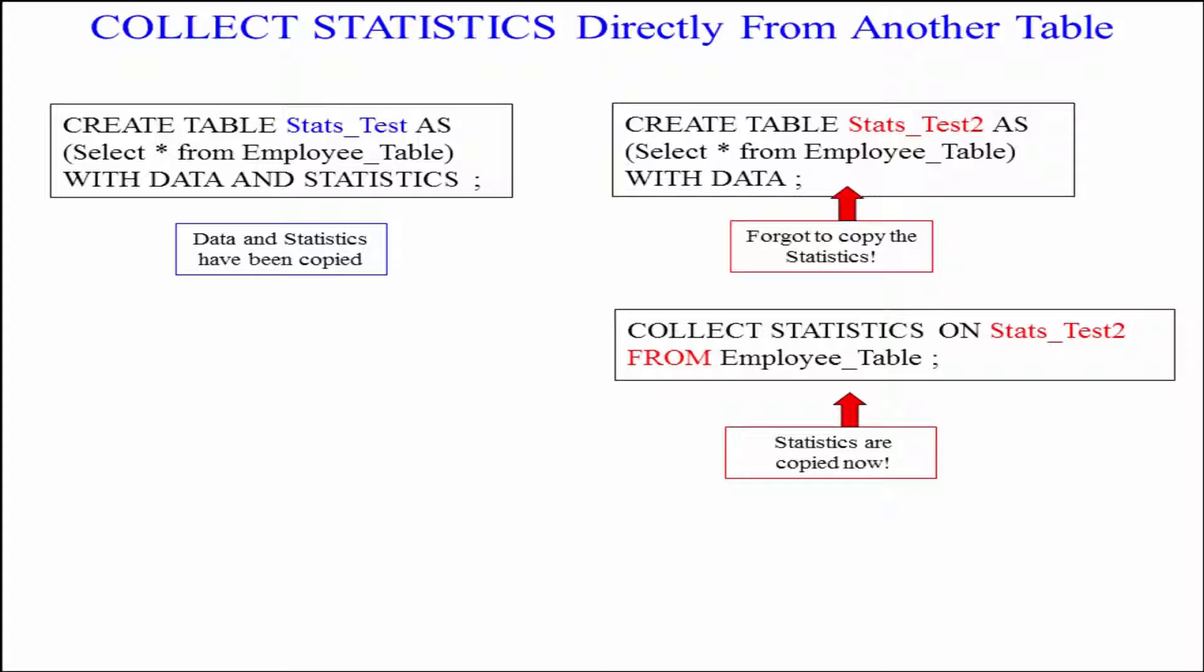Now, maybe I forgot to do that. Look at this next example. I'm going to create table Stats Test 2 in red as, once again, selecting all the columns from the Employee Table, and I say with data. I could say with no data, but I said with data. Those are the two options, but I did not bring the statistics over.